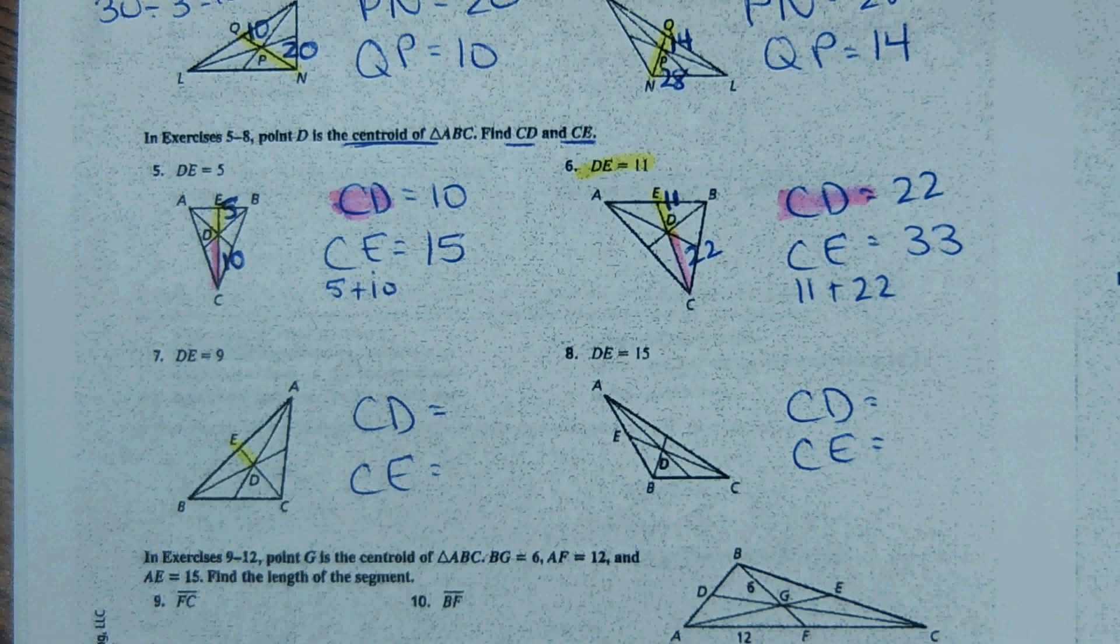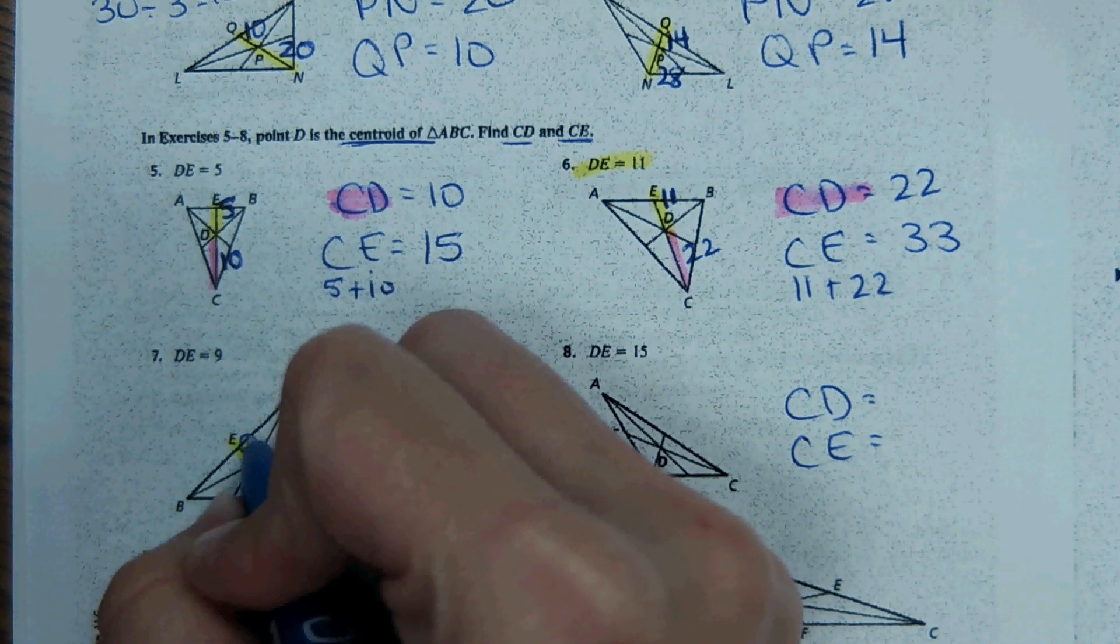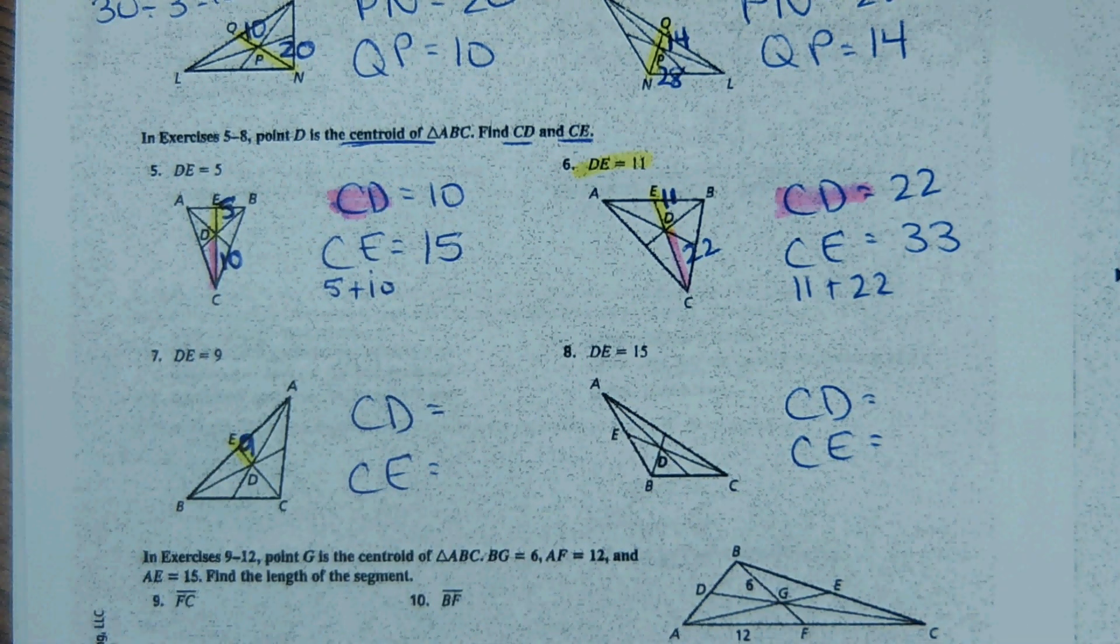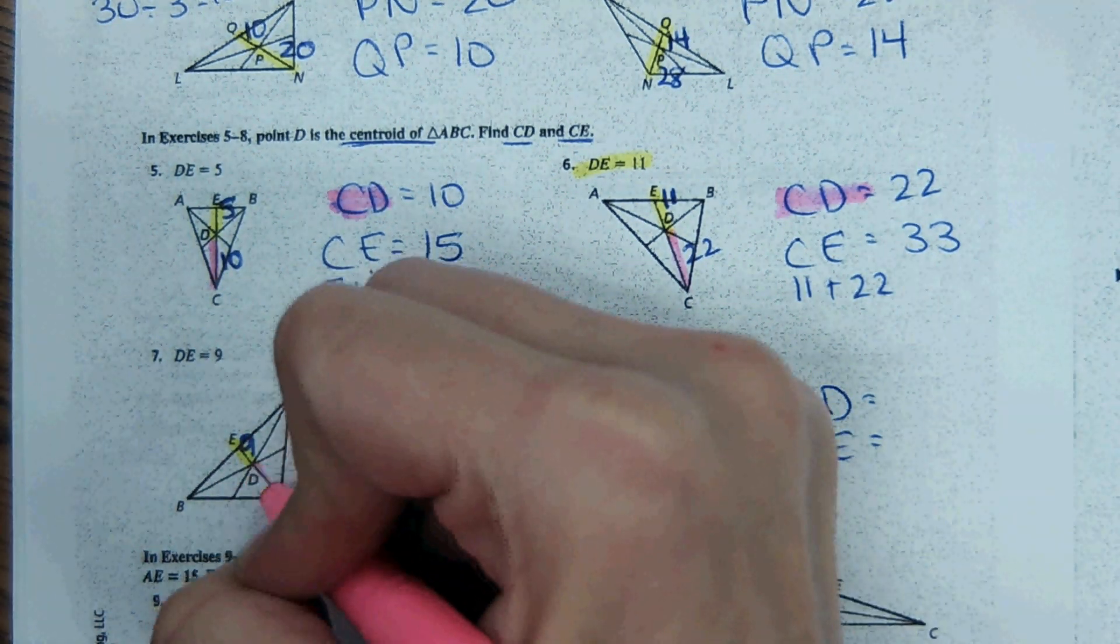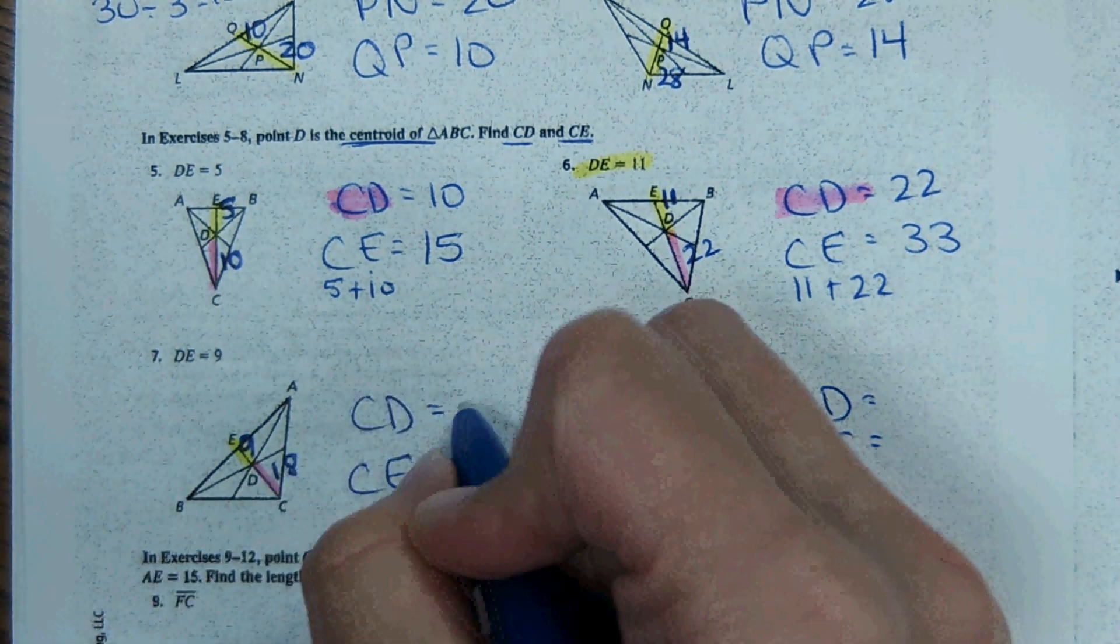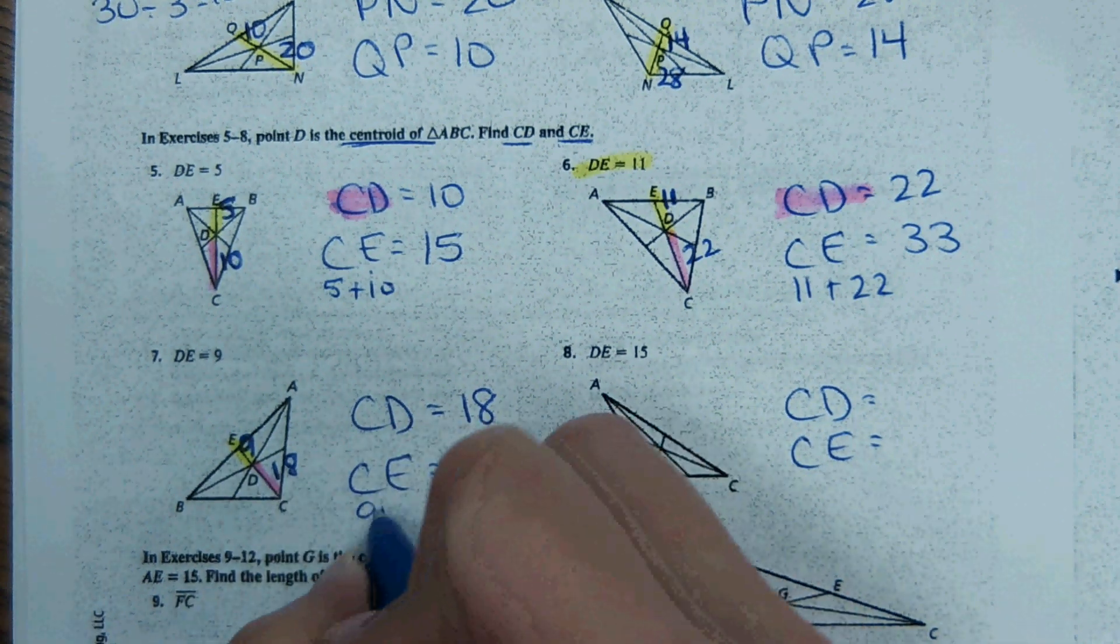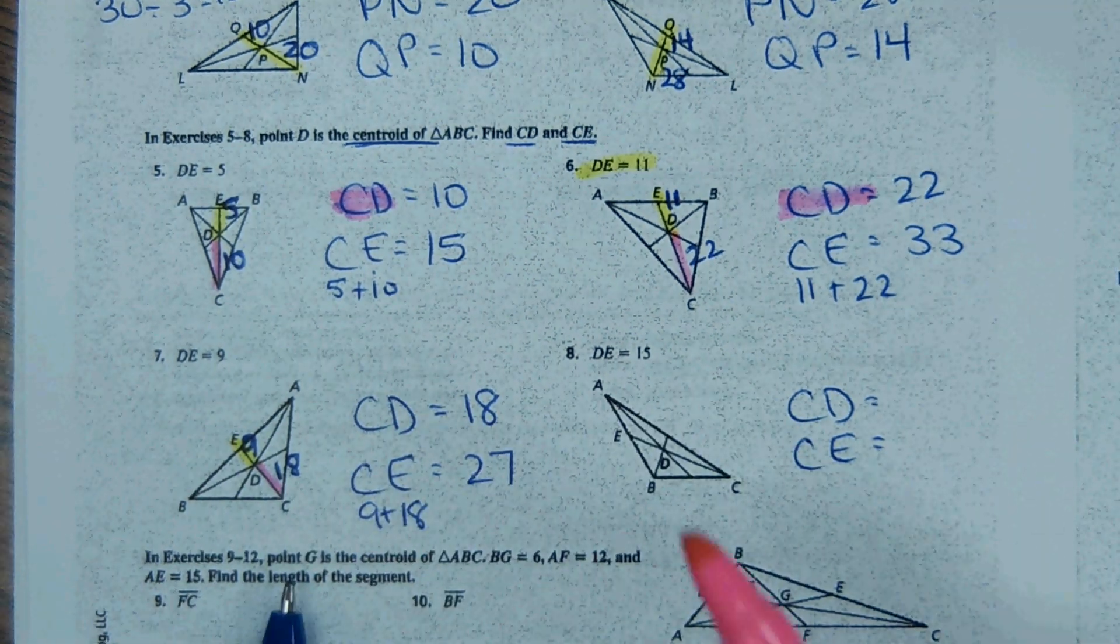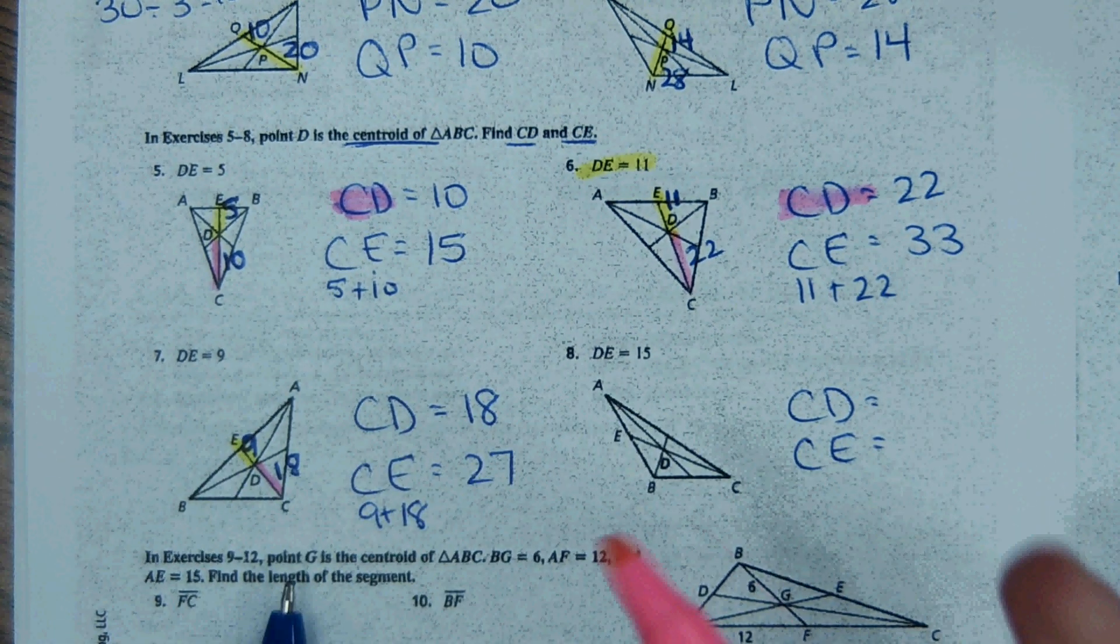DE right here is 9. CD right here is double the 9, so 18. And then CE, the whole length, will be 9 plus 18, which is 27.